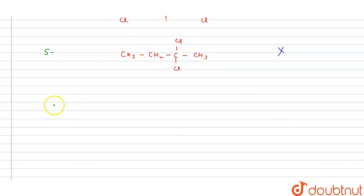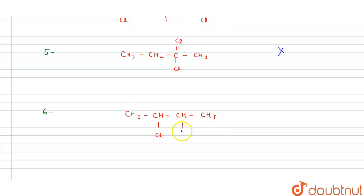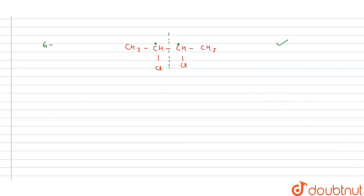The sixth isomer is CH3-CHCl-CHCl-CH3. Are there two chiral centers? Yes — each CHCl carbon has four different substituents: H, CH3, Cl, and the adjacent CHCl-CH3 group. A plane of symmetry is also present between the two central carbons. Therefore, this is our meso compound — a meso isomer.